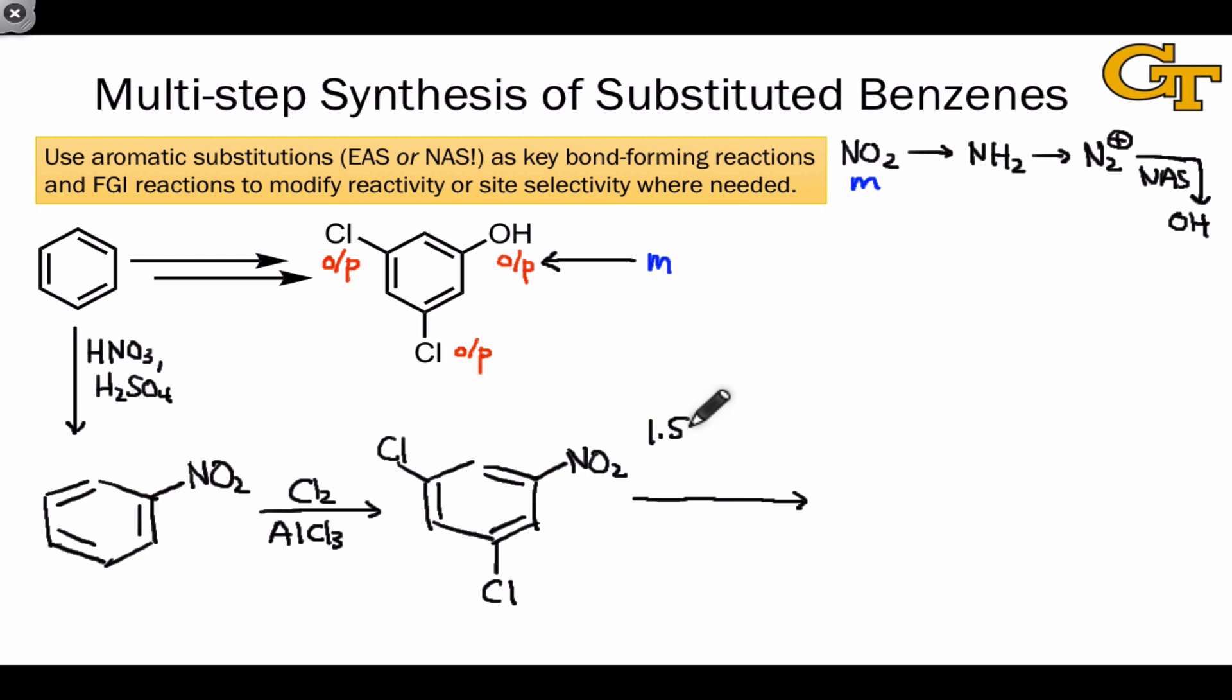What we need to do is first reduce the nitro group to an aniline using tin and HCl, and then diazotize it using nitrous acid, HONO, or the combination of sodium nitrite, NaNO2, and sulfuric acid. This gets us to the diazonium intermediate shown here, and to convert this to the target, all we need to do is substitute the diazonium group for an OH group, and this can be done by simply treating the diazonium salt with water.